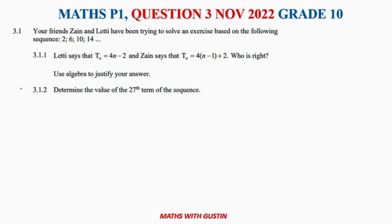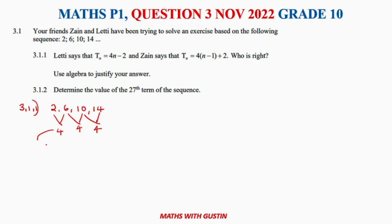For 3.1.1, we need to find the general formula of this number pattern. We check the differences: 6 − 2 = 4, 10 − 6 = 4, 14 − 10 = 4. So the common difference is 4, found by T2 − T1, T3 − T2, and T4 − T3.